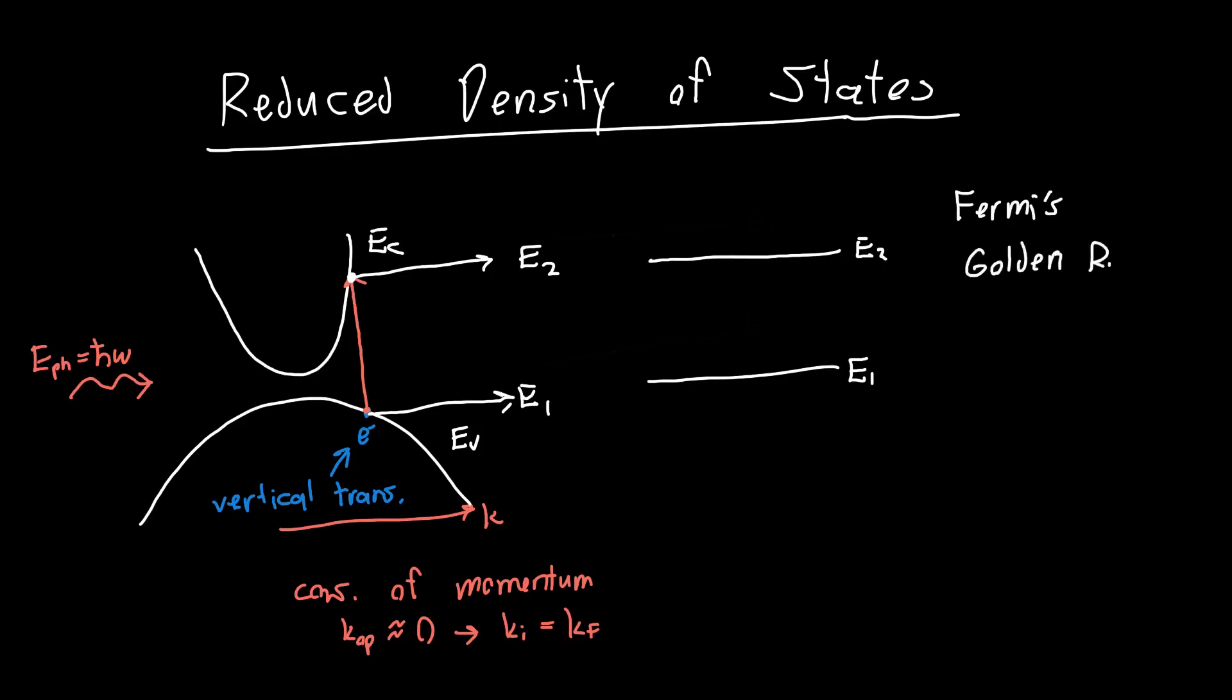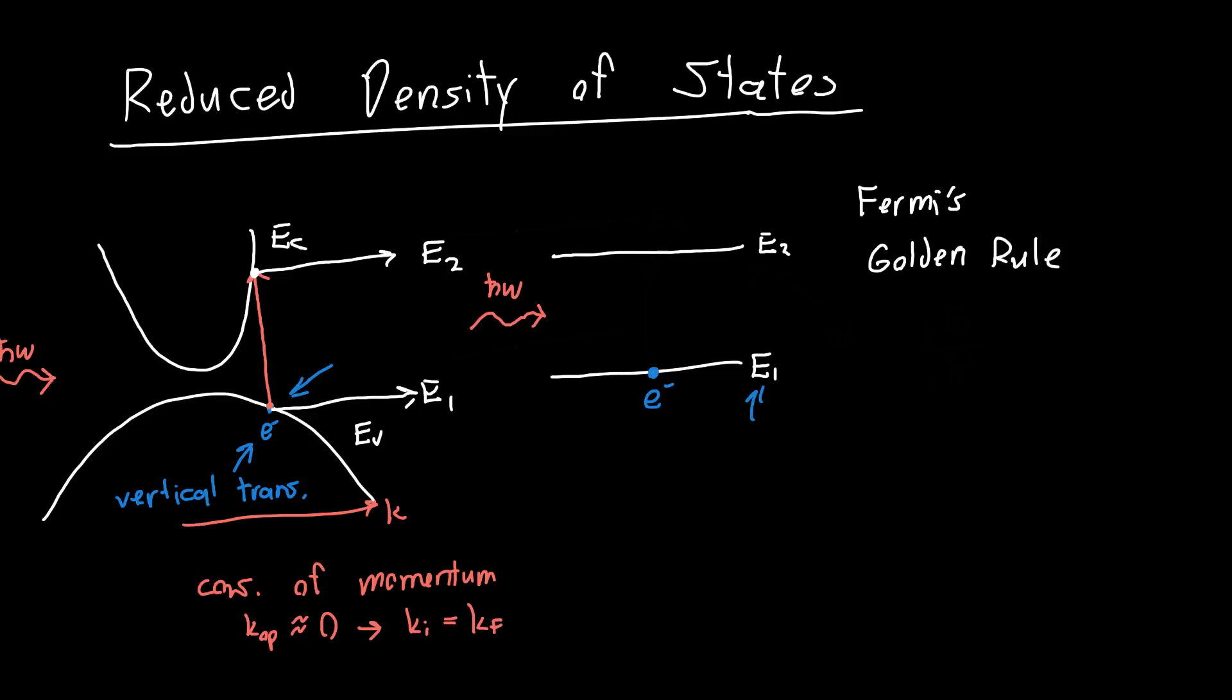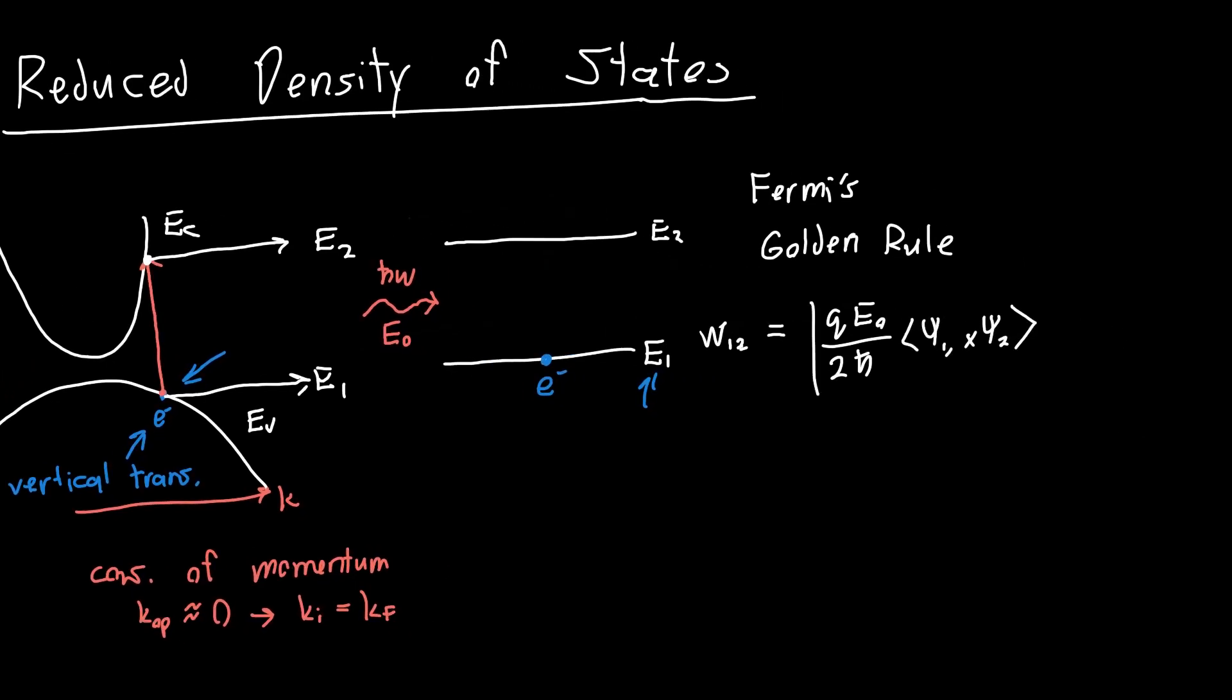Using Fermi's golden rule, we actually calculated the transition rate W from state 1 to state 2, and that was just equal to Q E0, so E0 was our electric field amplitude, over 2h-bar times our matrix element psi 1, x psi 2, which we said someone else will calculate for us. This magnitude squared times 2 pi times a delta function,